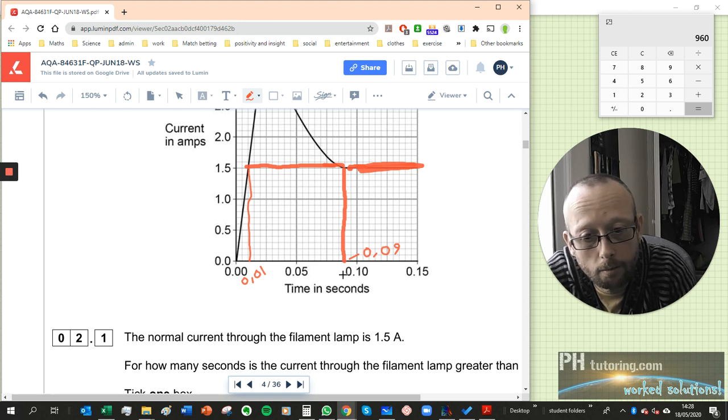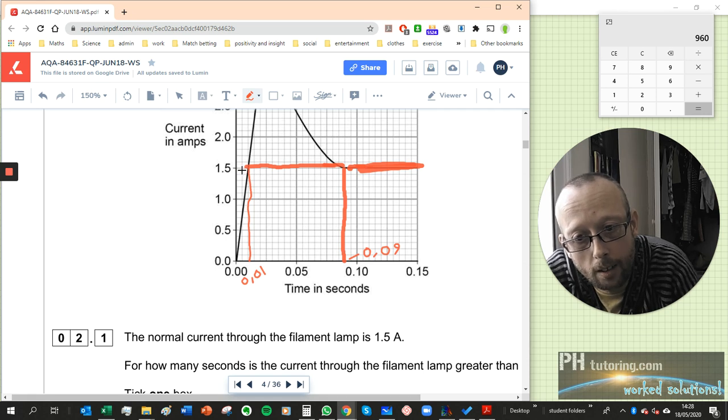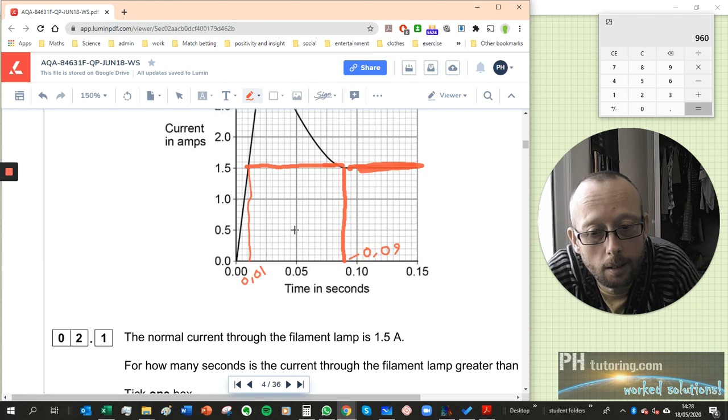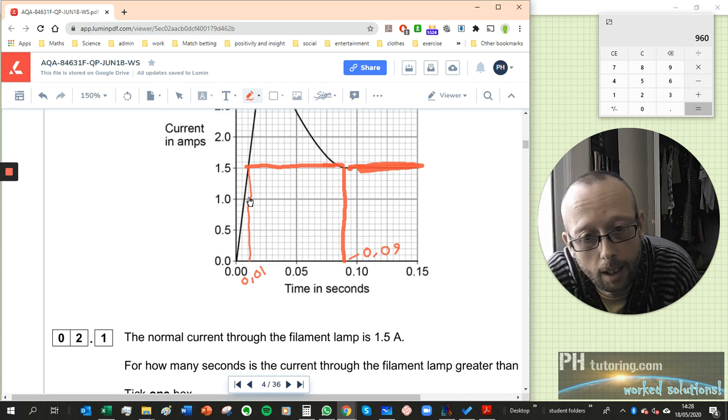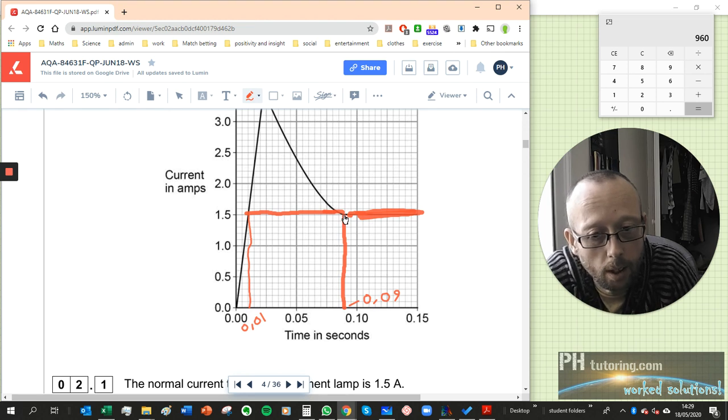May seem a bit unfair because they haven't taken into account that this beginning bit is below 1.5 amps as well. So I feel like that's a bit of a badly written question because someone could easily fluke that answer. You're looking at the period of time that it's above 1.5 amps, and it starts being above it from here and it falls to 1.5 amps around about here. So it goes from 0.01 seconds to 0.09 seconds, which means the difference is 0.08.